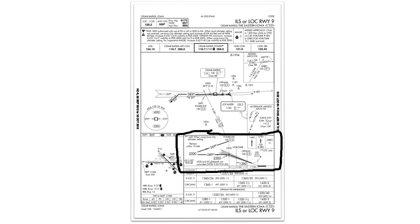The next section is the profile view section, which gives you a sideways look at the approach that you're flying. It gives you altitude information, descent information, and fixed information so you know where you should be altitude-wise in relation to a fix. It also gives you step-down altitudes, missed approach points, and missed approach icons, which give you a quick reference of how to fly the missed approach without referring all the way back up to the textual description.